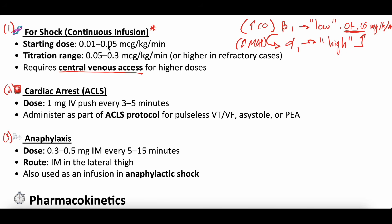For shock: continuous infusion, 0.01 to 0.05 micrograms per kilogram per minute, best done via central line. For cardiac arrest, you usually give one milligram IV push every three to five minutes per ACLS — advanced cardiac life support protocols. This is for all types of cardiac arrest. For ventricular dysrhythmias, there's some argument that after a couple doses of epinephrine, giving more might make it tougher for the heart to return to sinus rhythm, but per ACLS, one milligram IV push every three to five minutes.